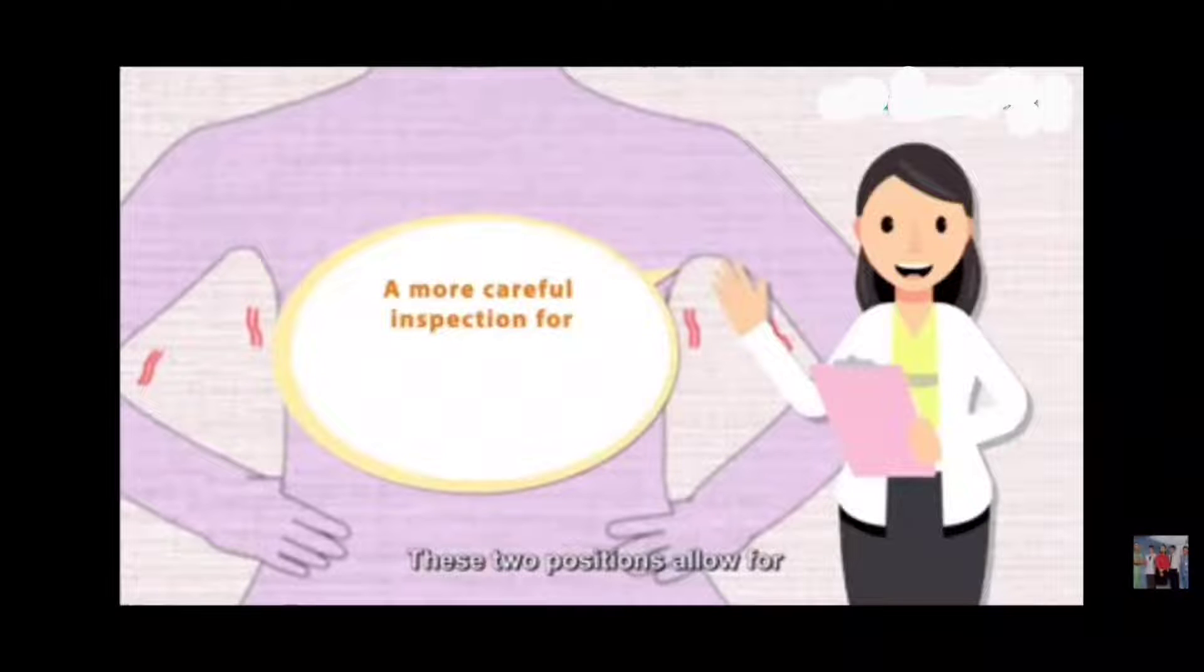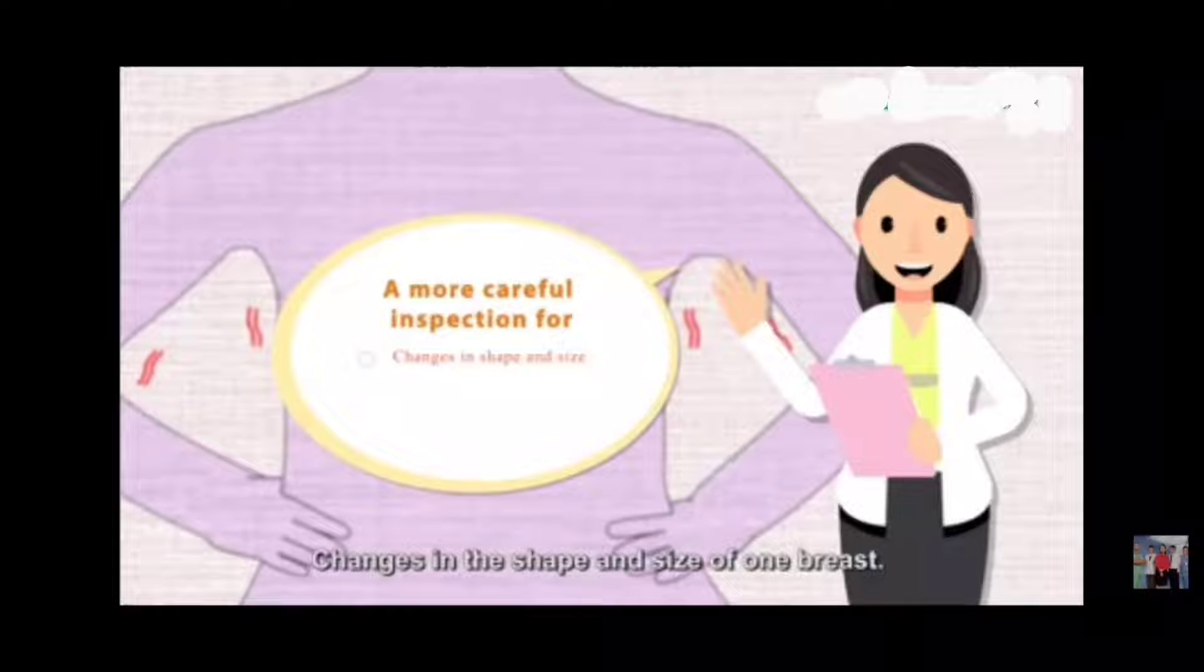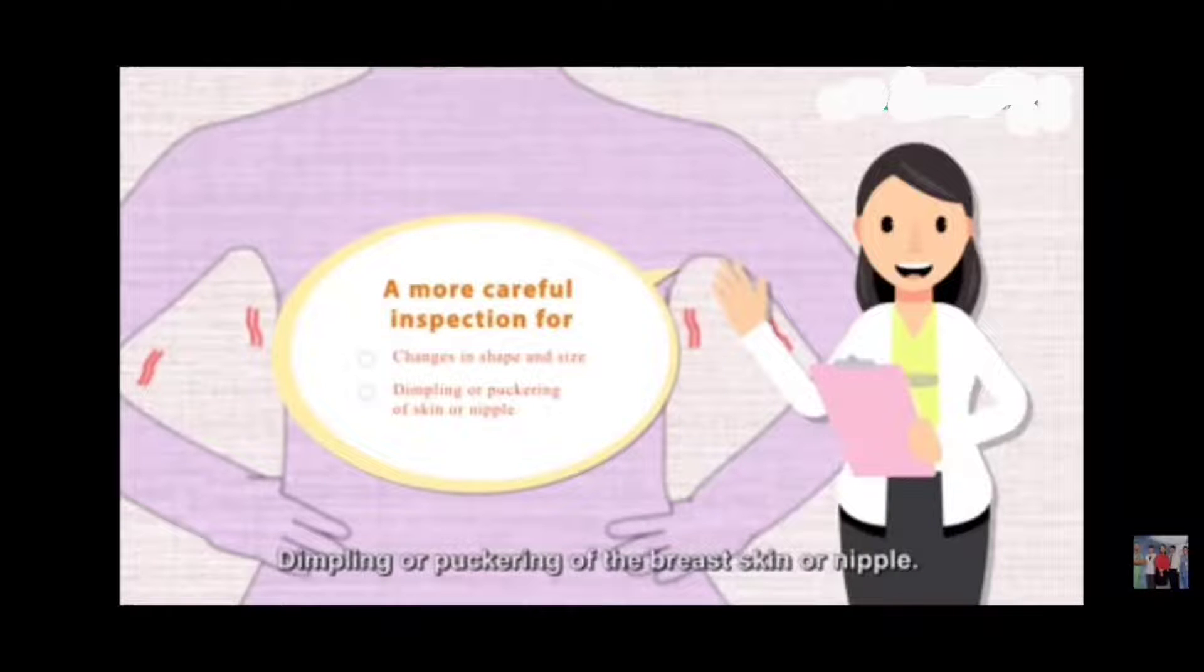These two positions allow for a close inspection of the following: changes in the shape and size of one breast, dimpling or buckling of the breast skin or nipple.